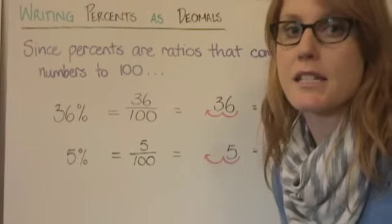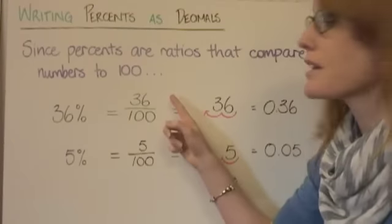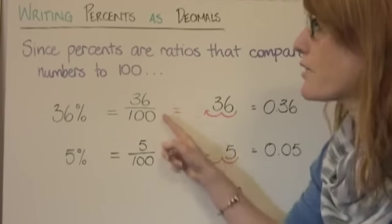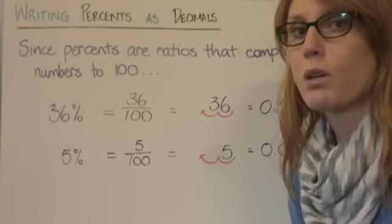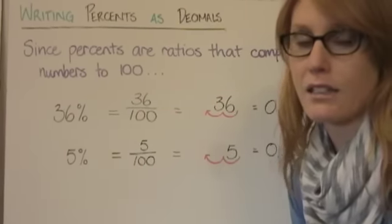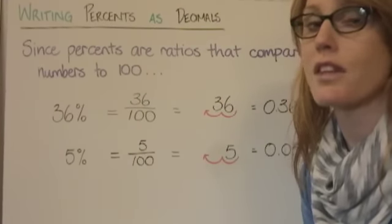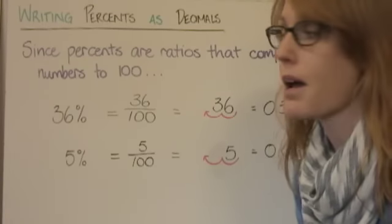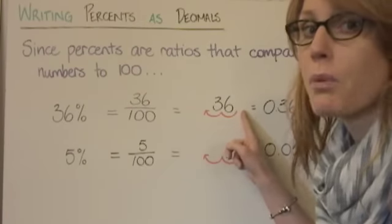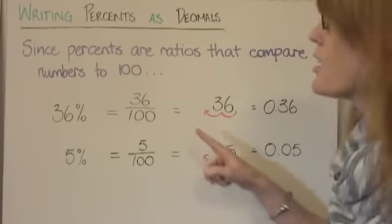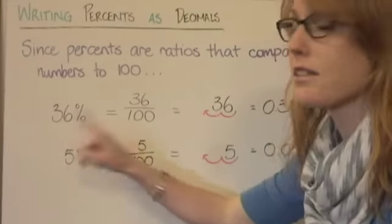Writing percents as decimals: since percents are ratios that compare numbers to 100, 36% would be 36 compared to 100. If we think of it as a fraction, it's 36 divided by 100. When dividing by a base 10 number, we move the decimal point to the left by the number of zeros. 100 has two zeros, so we move the decimal point two places to the left, giving us 0.36.